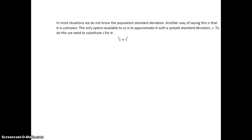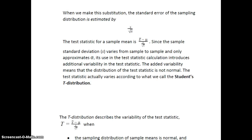Now, in most situations, we do not know the population standard deviation σ. Another way of saying this is that σ is unknown. The only option available to us is to approximate σ with the sample standard deviation s. So we're going to replace σ with s.